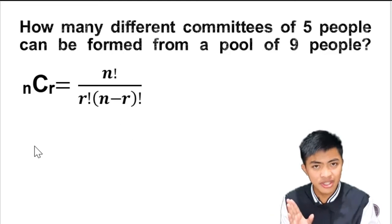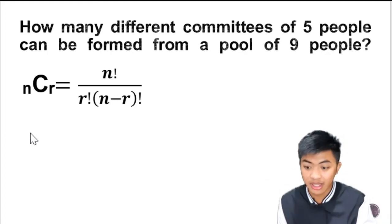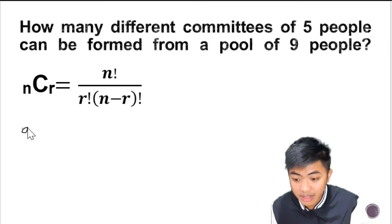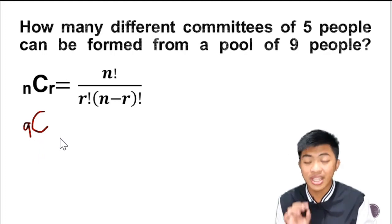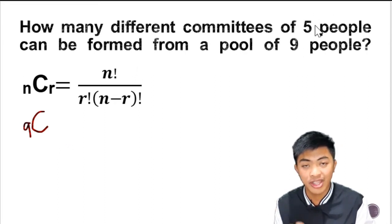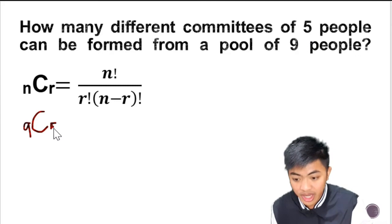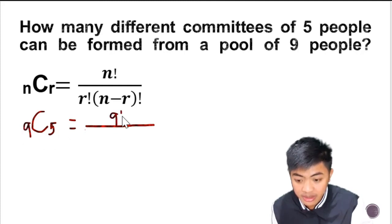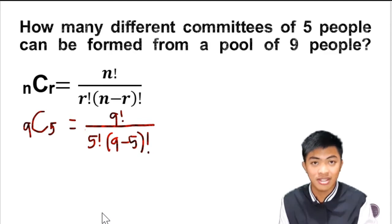So n is the number of objects in the whole set. We are choosing from nine people. n is always the bigger number, so we're going to substitute nine in place of n. R on the other hand is the smaller number. We are going to select five. So nine taken five. If we substitute it here, n is nine, r is five factorial, and nine minus five is four factorial. So I hope you're following.